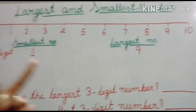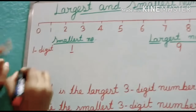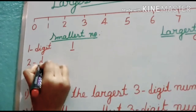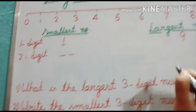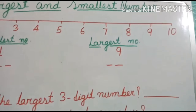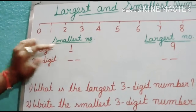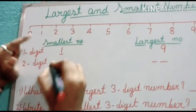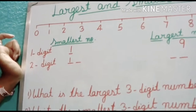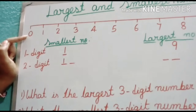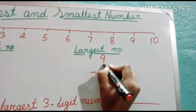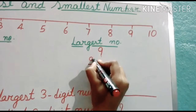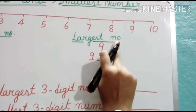For 2-digit numbers: smallest 2-digit number — we know the smallest 1-digit number is 1, so we put 1 in the first place and the smallest digit 0 in the second place. So the smallest 2-digit number is 10. Largest 2-digit number: the largest digit is 9, so we write 9 two times — that gives 99.